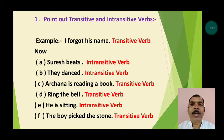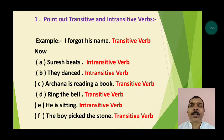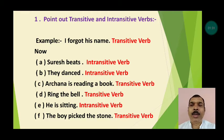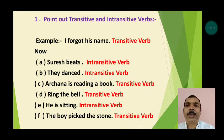Example: 'I forgot his name' — here 'forgot' is the transitive verb. 'Suresh beats' — 'beats' is a transitive verb. 'They danced' — 'danced' is a transitive verb. 'Archana is reading a book' — 'reading' is a transitive verb. 'Ring the bell' — 'ring' is a transitive verb.